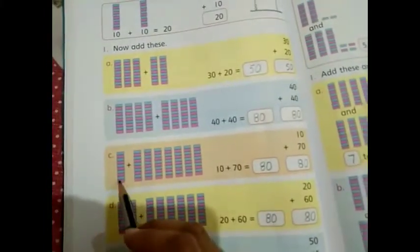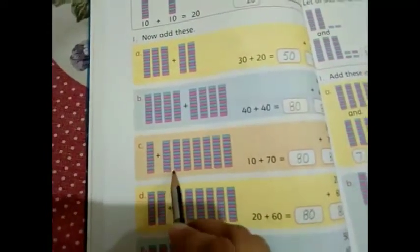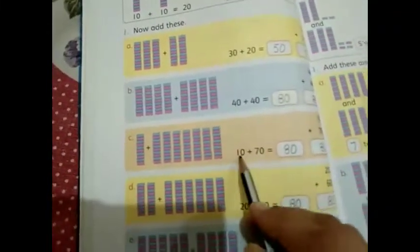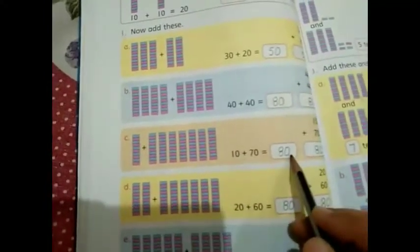In part C, firstly there is only 1 bar. So 1 bar means 10. Plus, now add the second group. There are 7 bars. So 7 means 70. 10 plus 70. 10 plus 70 is equal to 80.